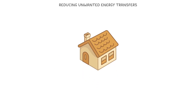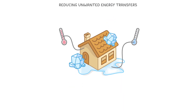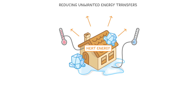Let's start by considering a typical house. Most people like their home to be nice and warm, even if it's freezing cold outside. In order to achieve this, we need to reduce the amount of heat energy that escapes to the outside environment, and there are a whole range of ways that buildings are adapted for this.